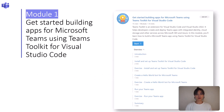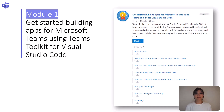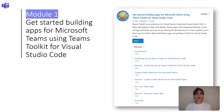In the first module, get started building apps for Microsoft Teams using Teams Toolkit for Visual Studio Code. You will learn how to install and set up Teams Toolkit for Visual Studio Code. You will also build your first Hello World app with Teams Toolkit from the samples gallery and understand how to best use Teams Toolkit to accelerate your app development.